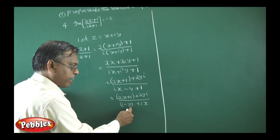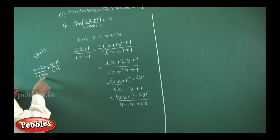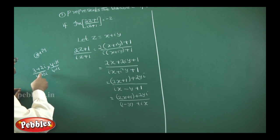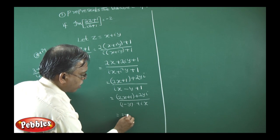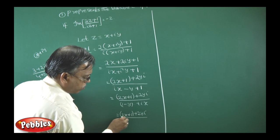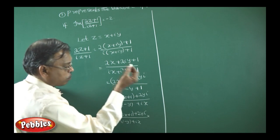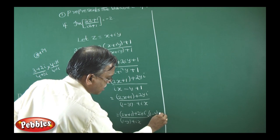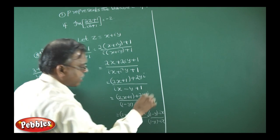The complex conjugate of the denominator (1 − y) + ix is (1 − y) − ix. So we multiply both numerator and denominator: [(2x + 1) + 2yi] × [(1 − y) − ix] divided by [(1 − y) + ix] × [(1 − y) − ix].